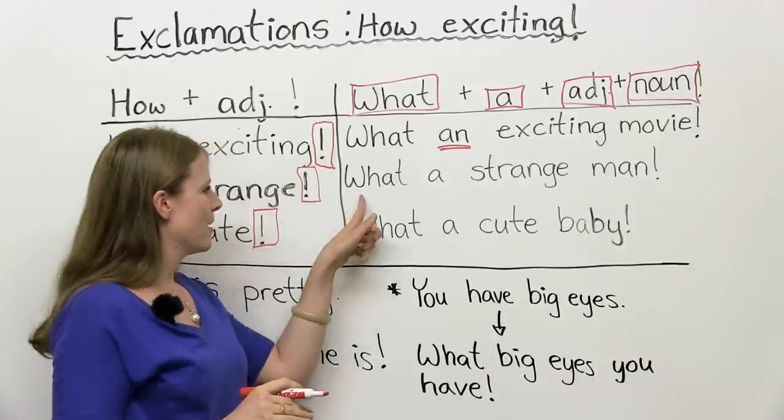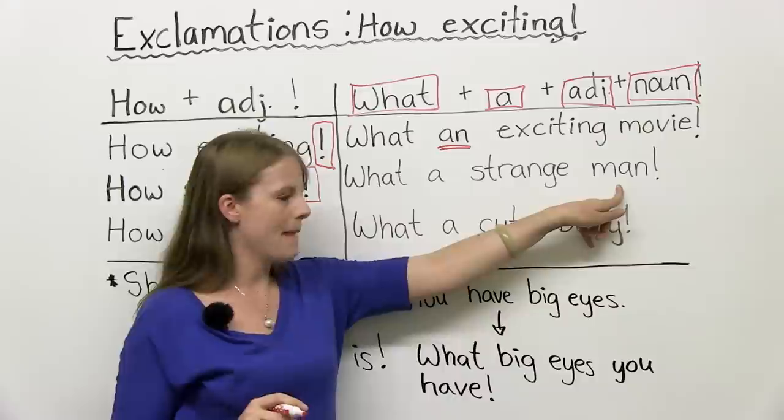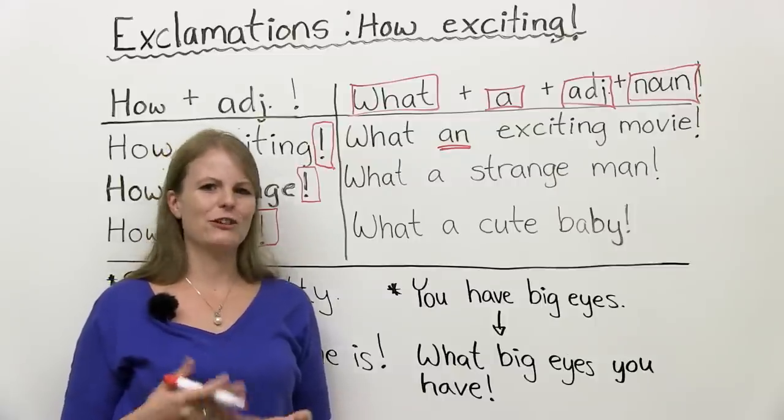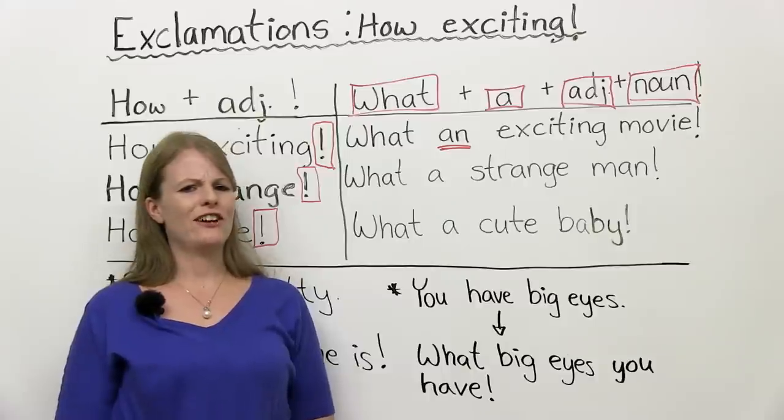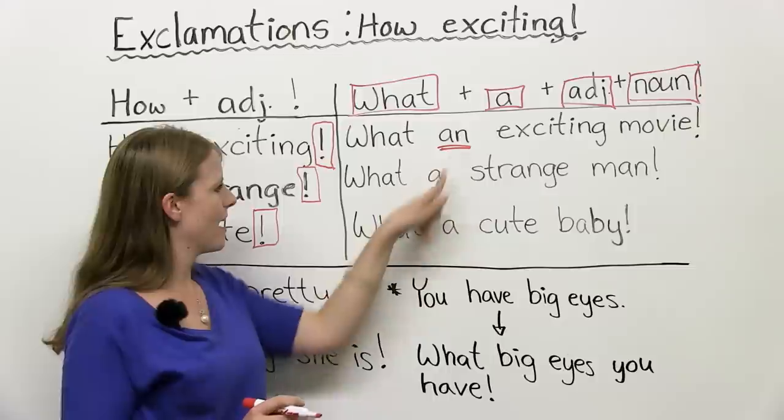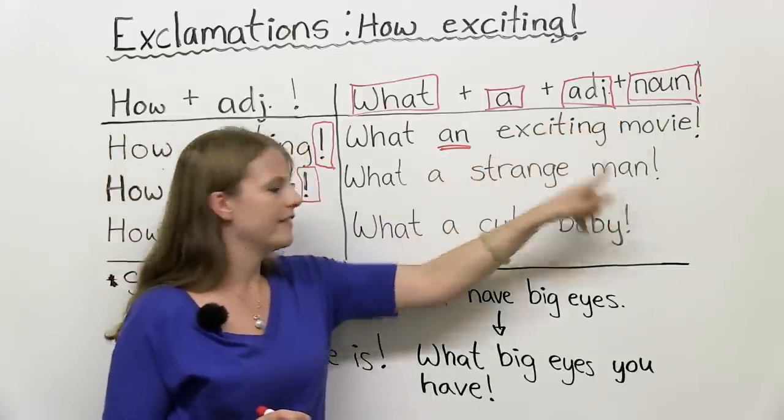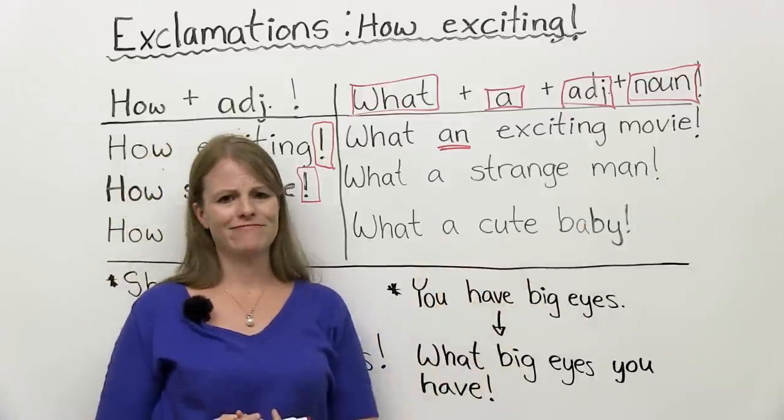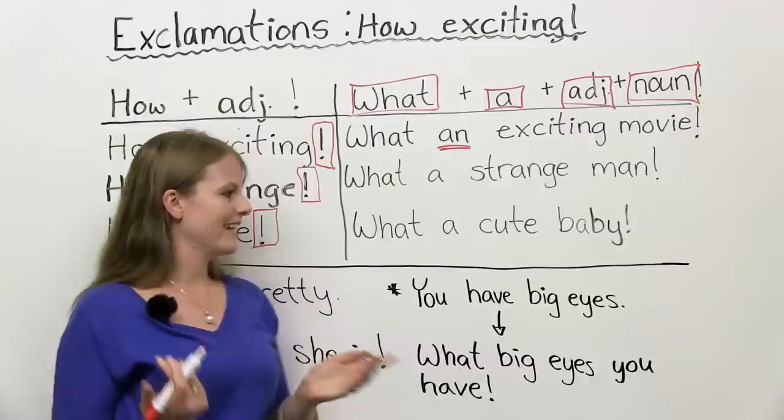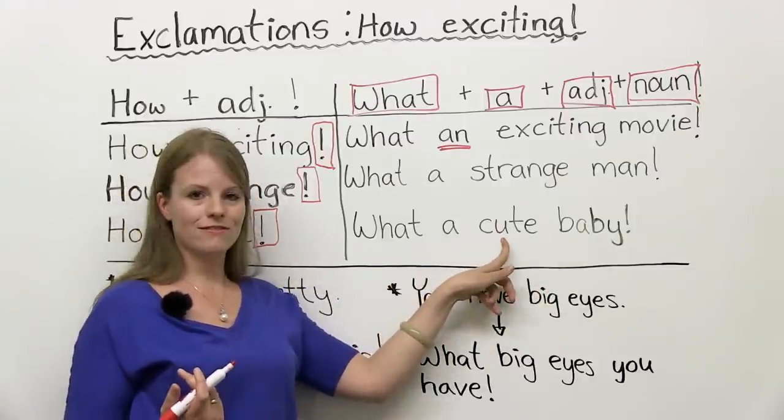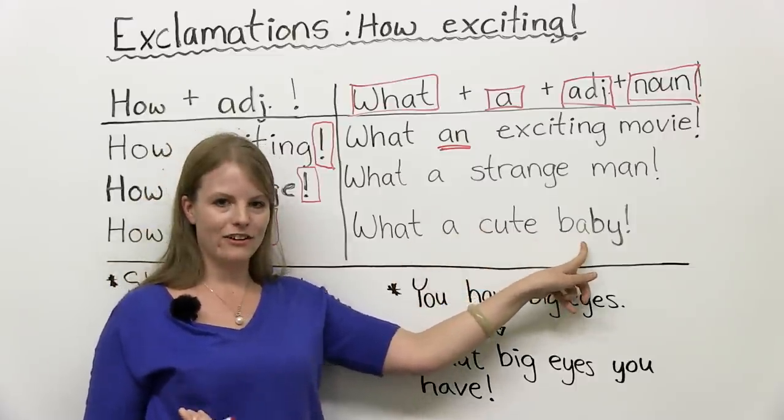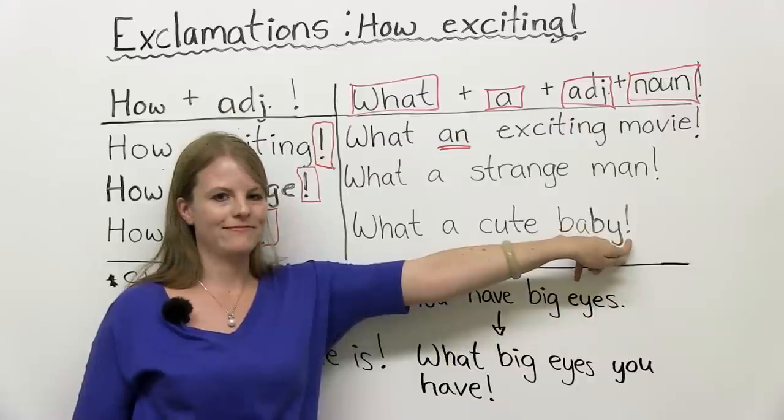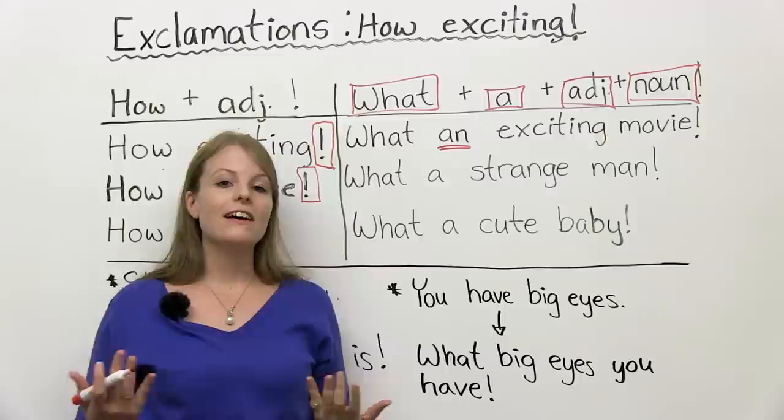Let's look at another example. What a strange man. So again, maybe you see a man doing something very strange. Or you meet someone, you think they're very strange. Oh, what a strange man. Again, what a, adjective is strange. Noun is man. Another example. What a cute baby. What a cute baby. And again, what is your adjective? Cute. What is the noun? Baby. Is there a verb? No. Is there an exclamation mark? Yes. That's the exclamation mark. So these are some examples of exclamations.